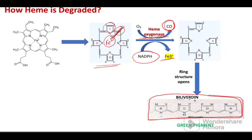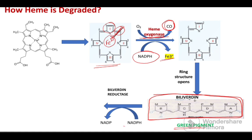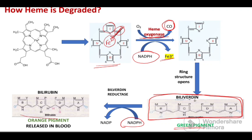Biliverdin is the first pigment formed in heme degradation and is a green colored pigment. In the presence of biliverdin reductase, an NADPH-dependent enzyme, biliverdin undergoes reduction to form bilirubin, which is an orange colored pigment. This orange colored pigment is released into the circulation. The fate of bilirubin is then determined by how it is excreted out of the body.